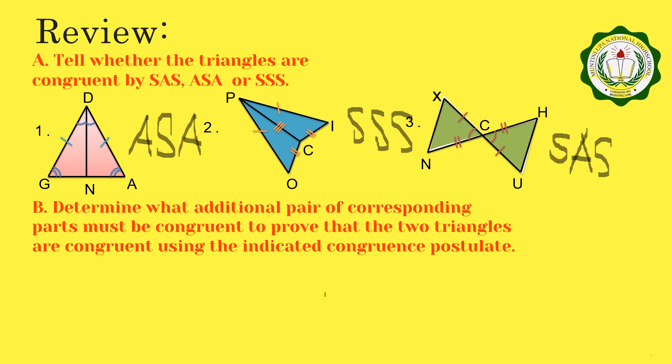For the second part of our review, we are asked to determine what additional pair of corresponding parts must be congruent to prove that the two triangles are congruent using the indicated congruence postulate. The first figure uses SSS. Based on the given markings, the congruent parts are segment ST congruent to segment BT, and segment SE congruent to segment BE. What we need is another pair of sides, so we have segment ET congruent to segment ET, making these two triangles congruent under SSS congruence postulate.